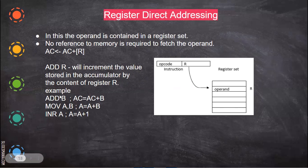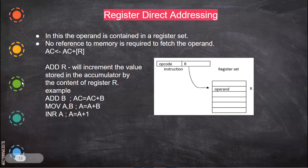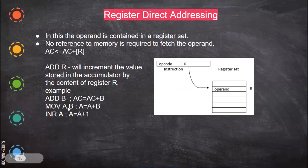For example, add B — when you give add B, it goes and fetches the content of the B register, and it will be added with the accumulator. Note that A is not explicitly given, but when you give add B, it will add the content of B register along with the accumulator value, and the result is stored back in the accumulator. Then move A comma B — here also both are registers, so this is another register direct addressing example. The content of B is moved to A.